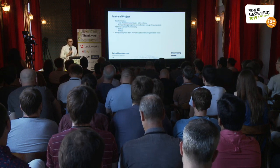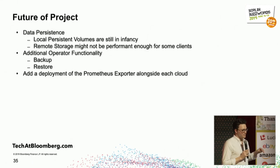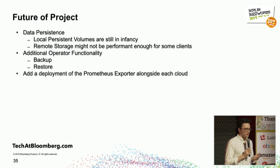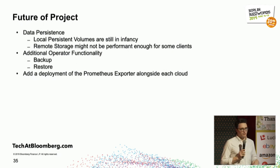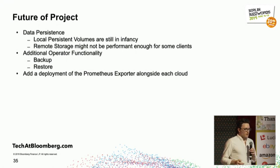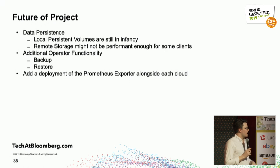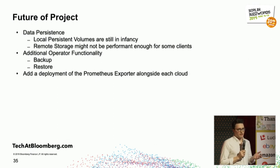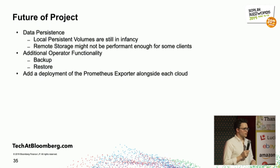What is the future of this project? There are a lot of things we need to do. Data persistence is there, but we haven't done a lot of testing around local persistent volumes, which are still in their infancy in Kubernetes, and we haven't done much testing around remote storage capabilities. There's additional operator functionality we need, such as backup and restoring, which we're getting to this month. Many operators have backup and restore capabilities we want to build natively into the Solr cloud operator. We also want metrics to be provided as easily as possible — spinning up a Prometheus exporter alongside each cloud would be great.